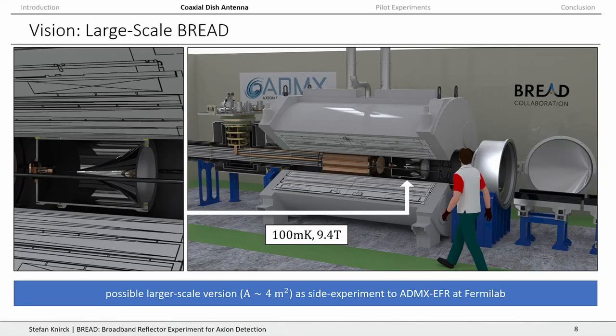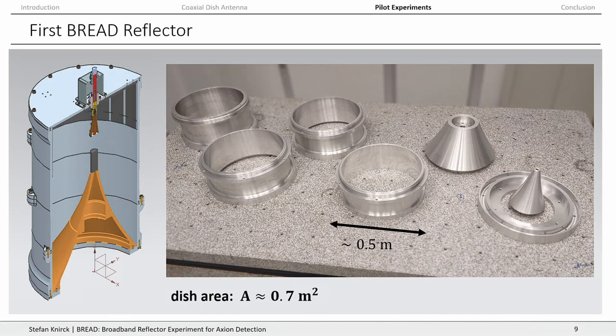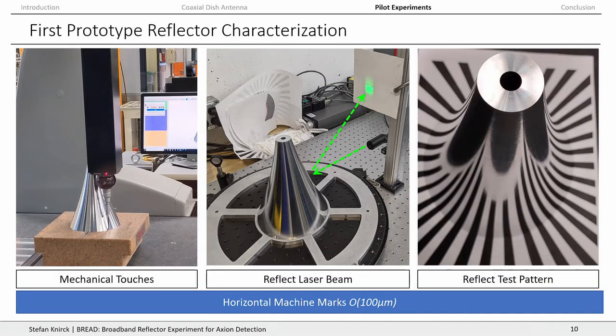Our long-term goal is to pair this with a solenoid magnet — for example, the ADMX EFR magnet, which we will get next year at Fermilab. We are already starting to move and decommission it from its current location. This would allow us to build a dish antenna with an area of four square meters, which would be quite nice. We very recently got a first prototype of this — a drawing of the setup cut up in several pieces, which arrived a couple of weeks ago.